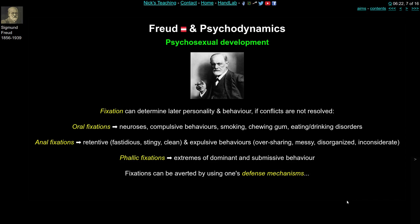Oral fixation leads to neuroses and compulsive behaviours — smoking, chewing gum, eating and drinking disorders. Note that Freud himself is holding a cigar. Anal fixation at the second stage could lead to being anally retentive — fastidious, stingy, very clean — or anally expulsive, meaning you overshare, are messy, disorganised, or inconsiderate. A phallic fixation might lead to more extreme dominant and submissive behaviour. Fixation determines later personality and behaviour if conflicts are not resolved.